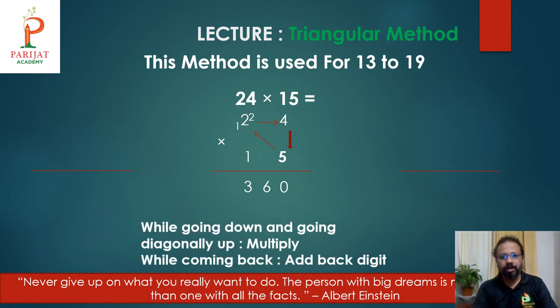62 times 14. Again, 2 times 4 is 8. 4 times 6 is 24 plus 2. 26 carry over 2. 6 plus 2 is 8. Answer is 868.